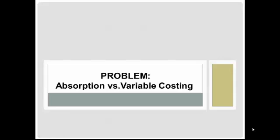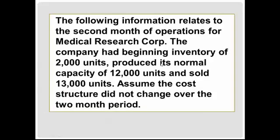Welcome. Turn to the problems in your Absorption vs. Variable Costing lecture notes and we'll take a closer look. The following information relates to the second month of operations for Medical Research Corp. The company had beginning inventory of 2,000 units, produced its normal capacity of 12,000 units, and sold 13,000 units. Assume the cost structure did not change over the two-month period.